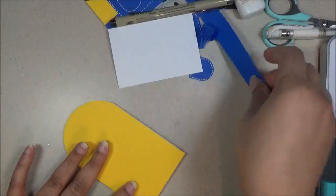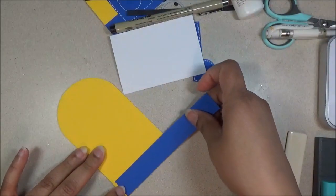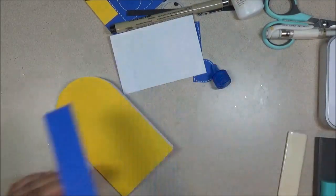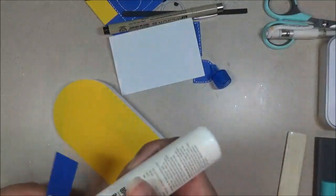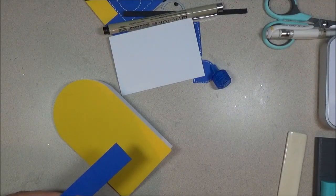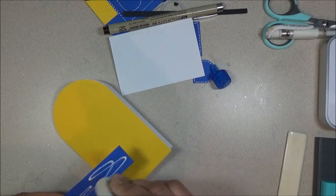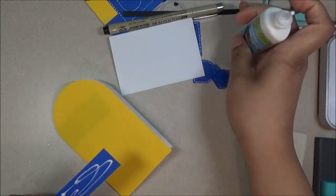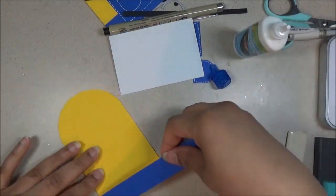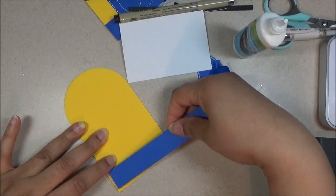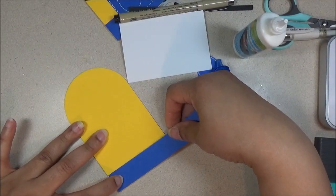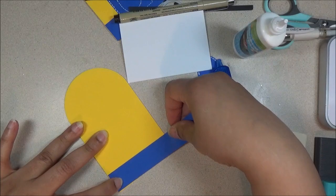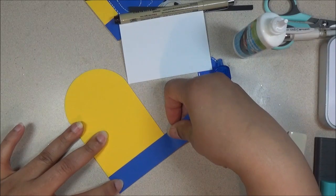Then we're going to start on his little clothing so I'm just going to glue on the strip and then I'm just going to trim off the extra. It's really easy to put this one together.